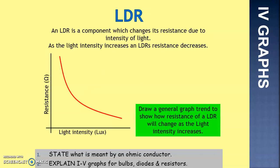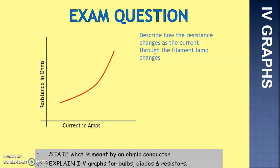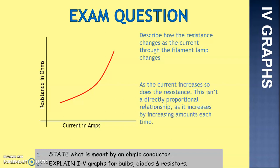Quick exam question: describe how the resistance changes as the current through the filament lamp changes. From the graph, as the current goes up, the resistance goes up. This is not a linear relationship — it's not directly proportional. It goes up by increasing amounts each time, which we can tell because it's a curve and not a straight line.